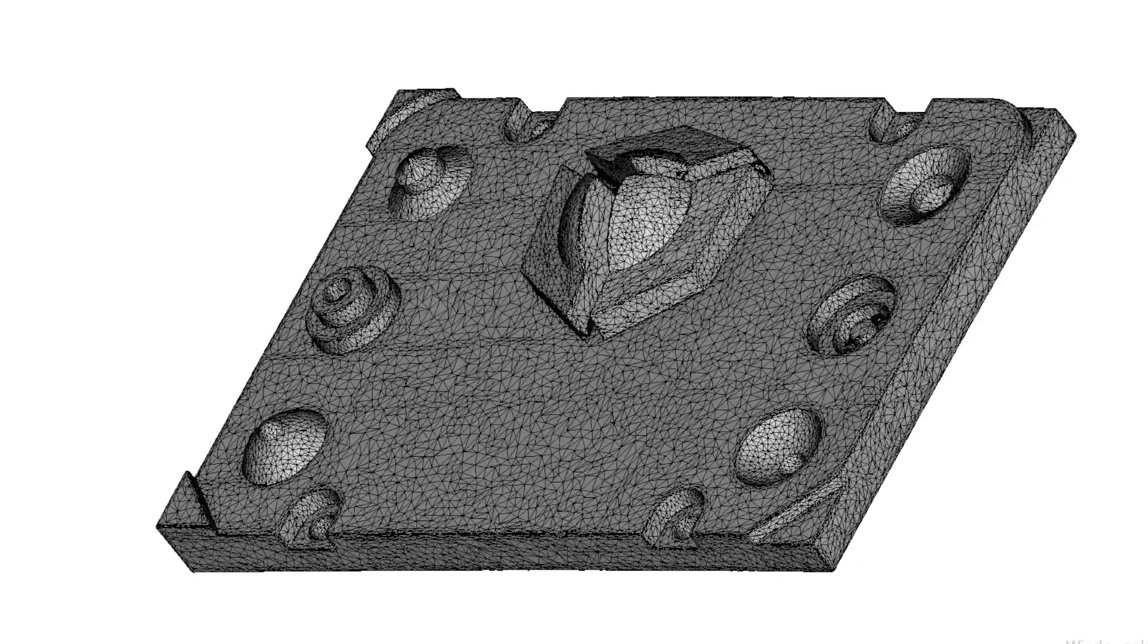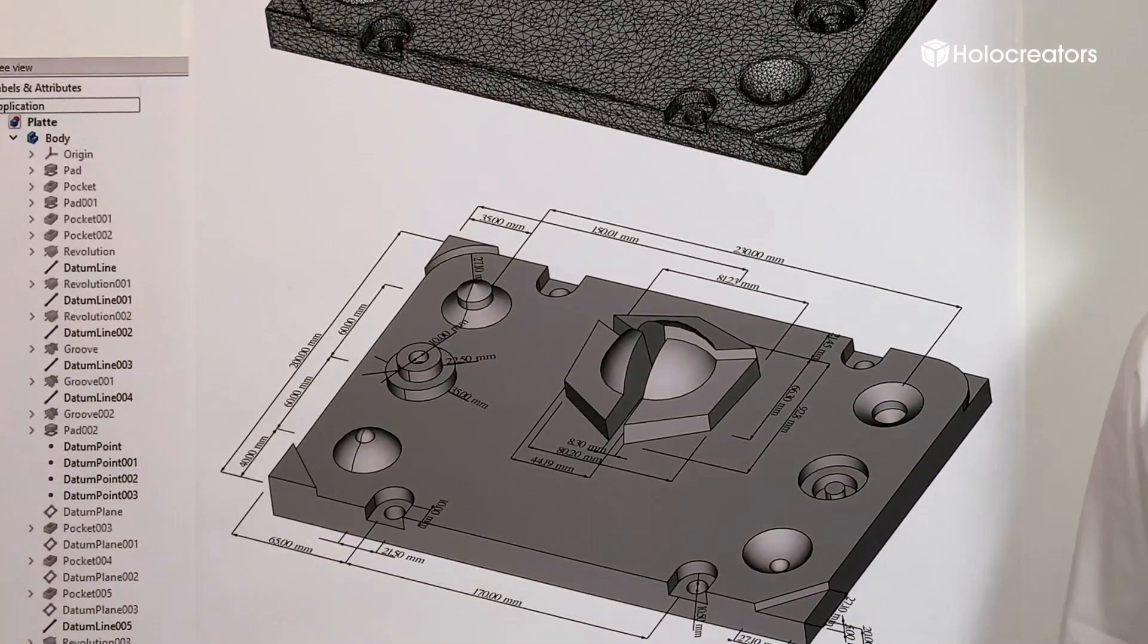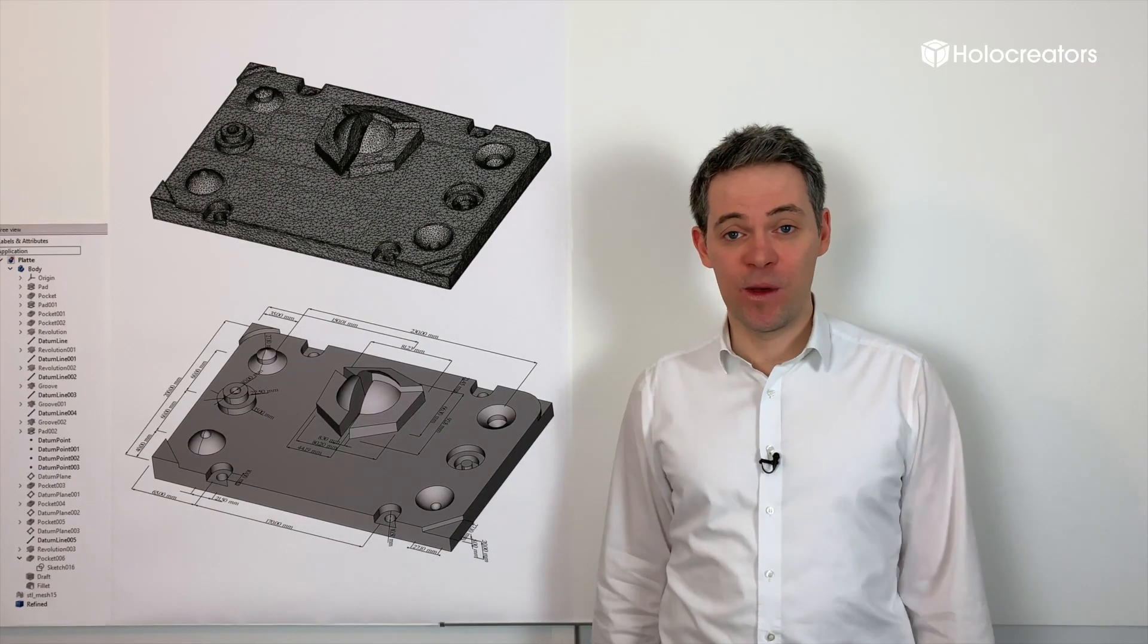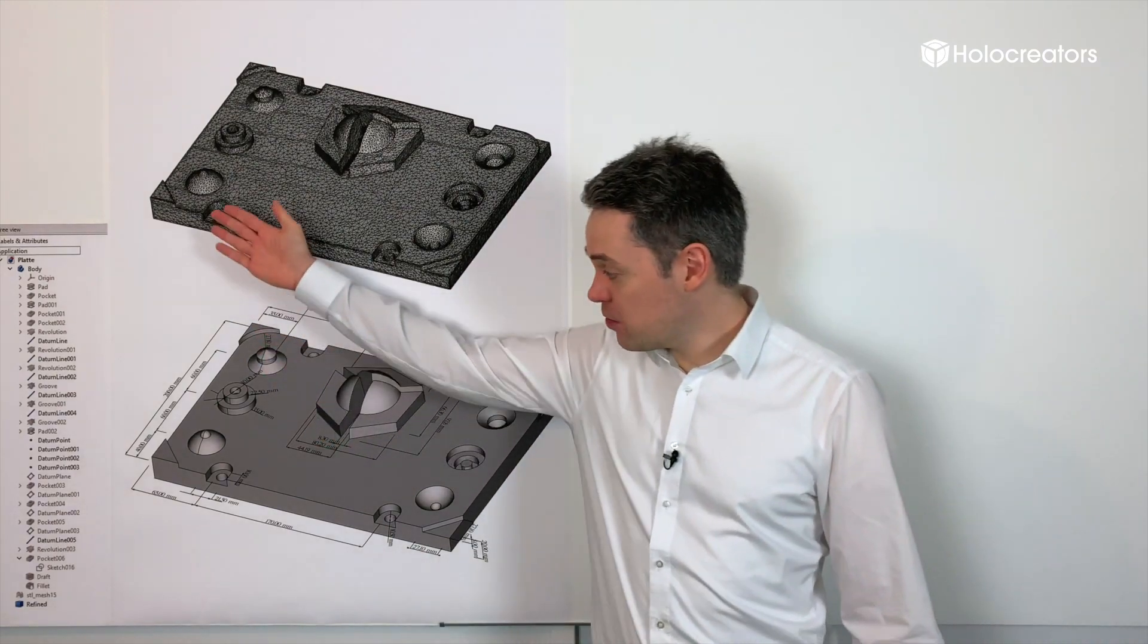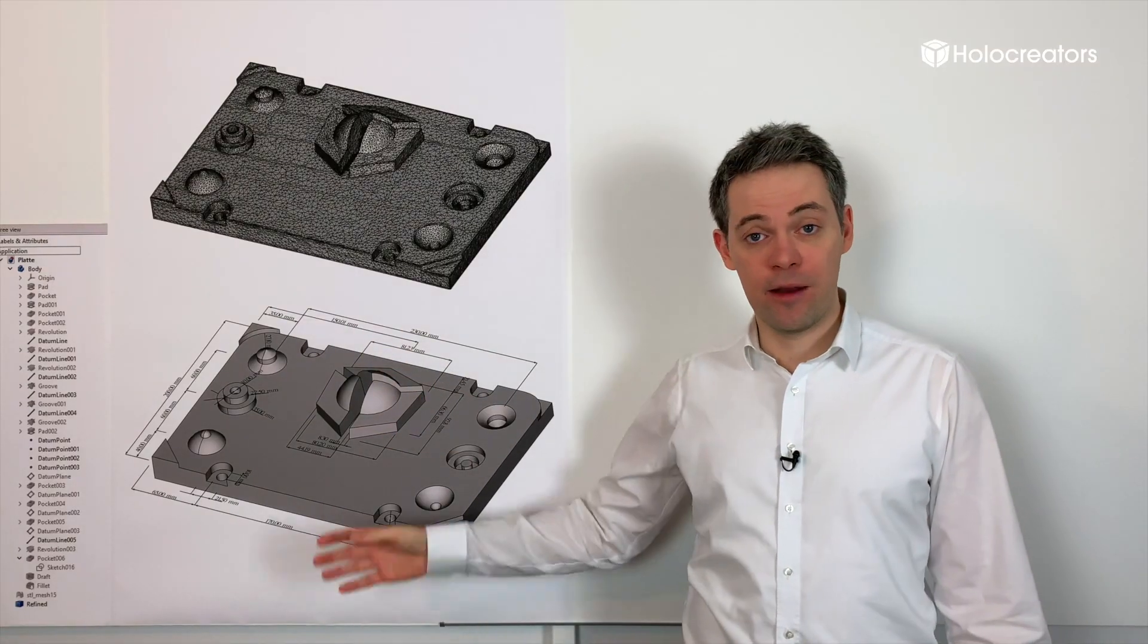With this reverse engineering technique, we can convert a 3D scan into the native CAD format of the client, so directly into the CAD system with which the client is working. The entire history tree is included inside the model and can be modified.